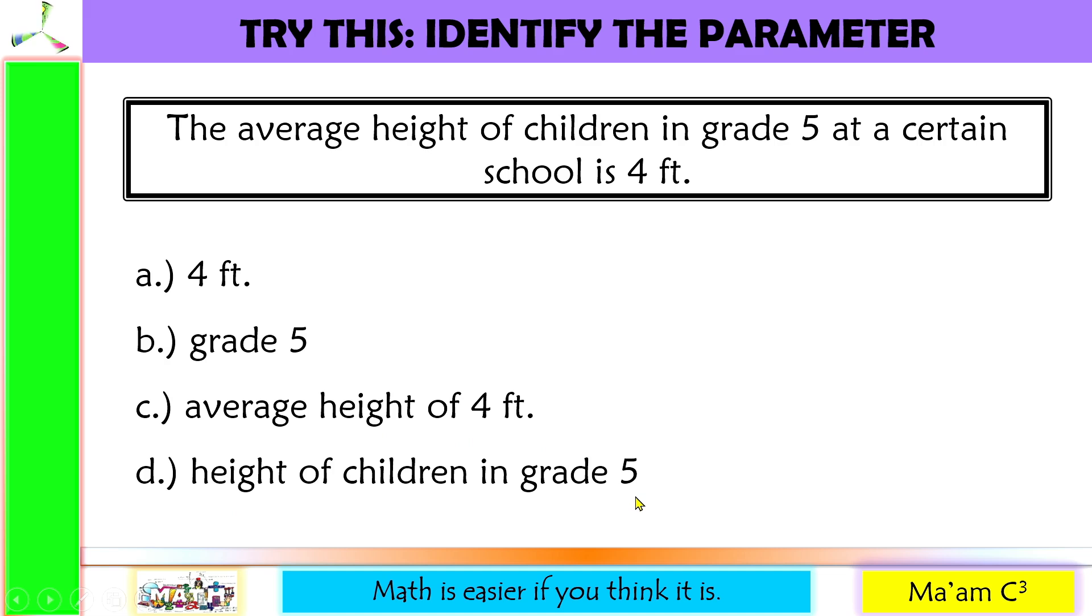Bear in mind that a parameter is a data that describes the population. It could be a mean or average, standard deviation, proportion, variance, or correlation coefficient. Let us analyze which is the population in this scenario. The population here is the children in grade five or grade five.